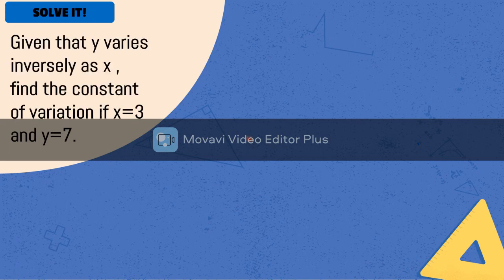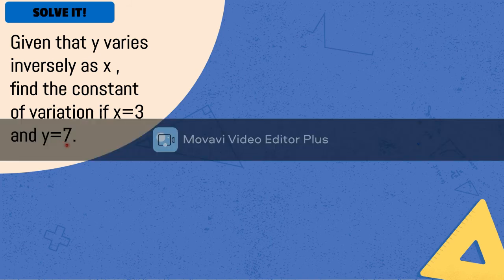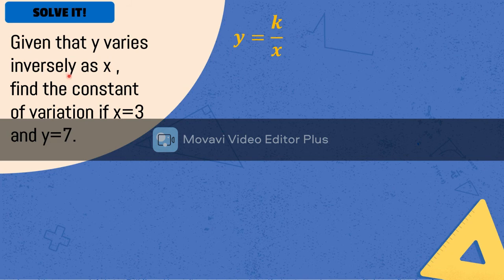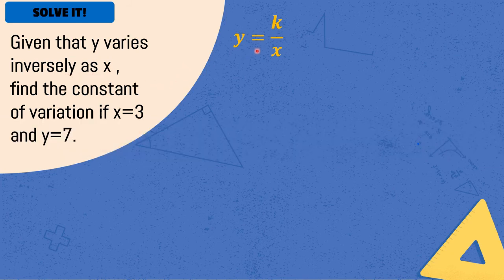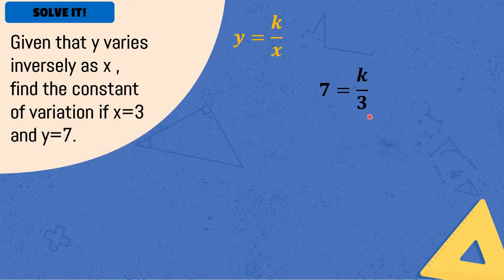Now, let's try to solve the following involving inverse variation. Given that y varies inversely as x, find the constant of variation if x is equal to 3 and y is equal to 7. So, the first thing we need to do is create an equation. So, we have y varies inversely as x. Therefore, our equation will be y is equal to k over x. So, what we're looking for here is k. So, what we'll do is use substitution. We'll substitute 7 for y and 3 for x. So, we have 7 is equal to k over 3.